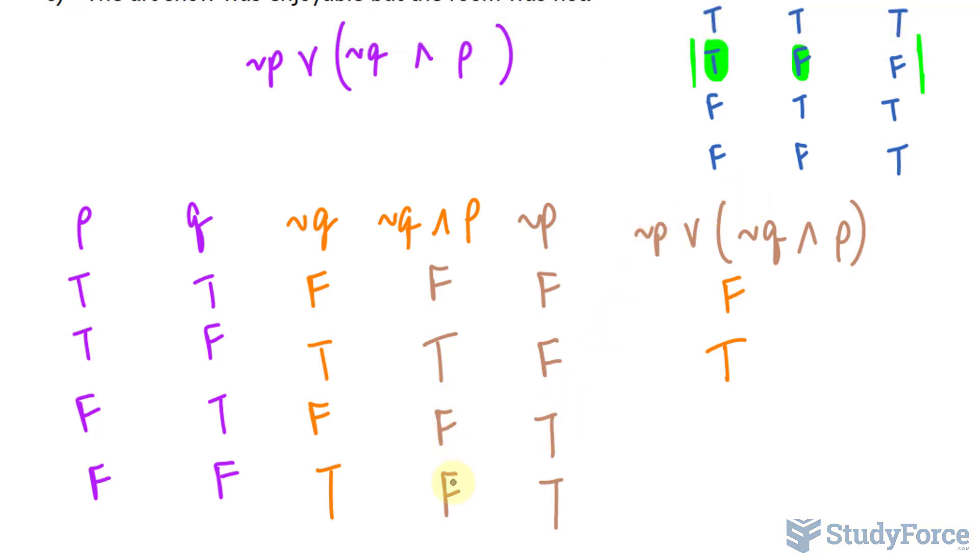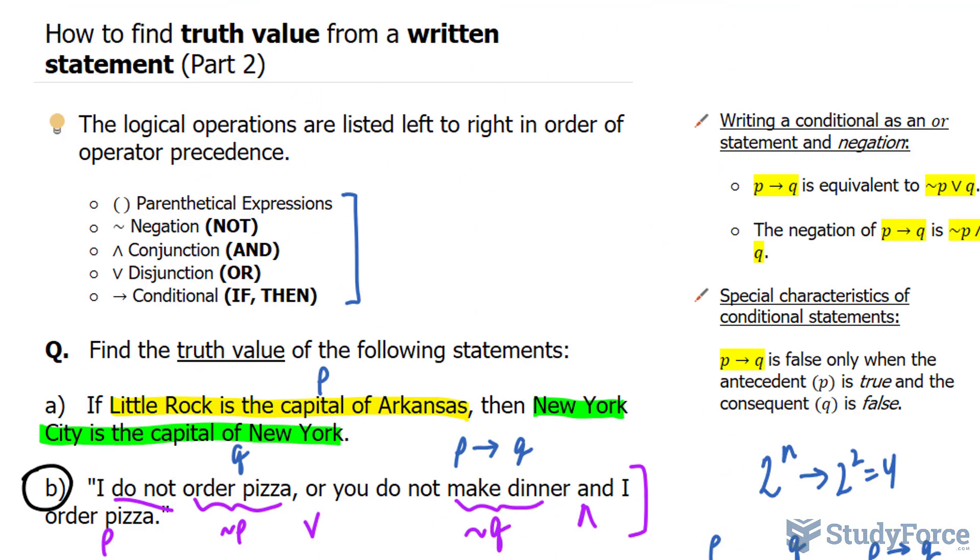However, that's false. But it doesn't matter. Only one needs to be true. Is that true? It is. So this doesn't even matter. These three hold true. And there you have it. Another example on how to find the truth value from a written statement.